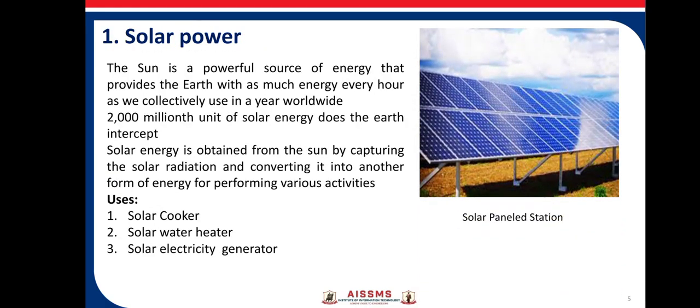The first example of renewable resources is solar power. The sun is a powerful source of energy that provides the earth with as much energy every hour as we collectively use in a year worldwide. 2,000,000,000,000,000,000 units of solar energy does the earth intercept. Solar energy is obtained from the sun by capturing solar radiation and converting it into another form of energy.